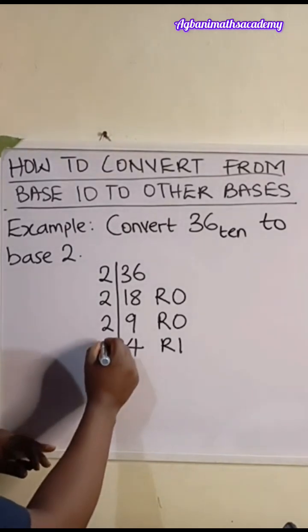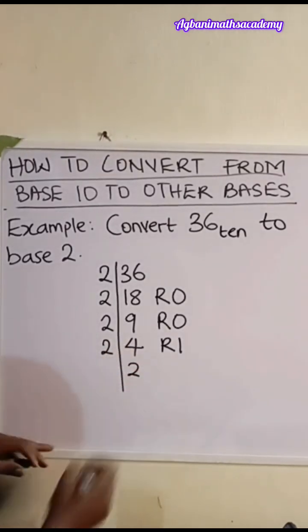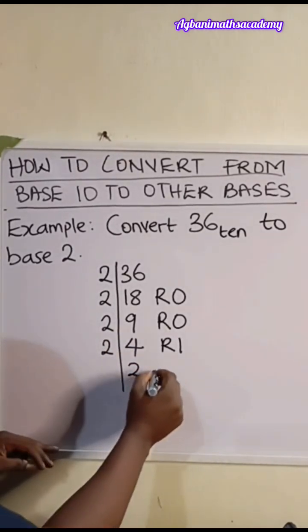Divide again by 2. 4 divided by 2 is going to give us 2. The remainder is 0.